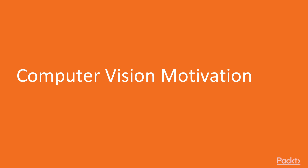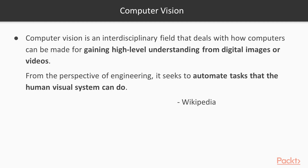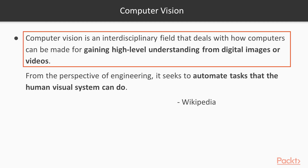Welcome to the first video of the section: Computer Vision Motivation. In this video we are going to look at a number of use cases from the industry which have demonstrated the practical usage of computer vision techniques in accomplishing day-to-day tasks. Here are the first two lines from the entry of computer vision in Wikipedia: 'Computer vision is an interdisciplinary field that deals with how computers can be made for gaining high-level understanding from digital images or videos.'